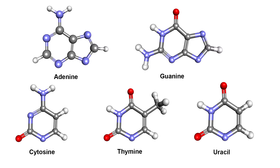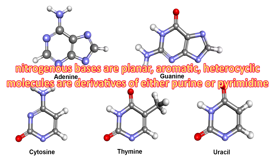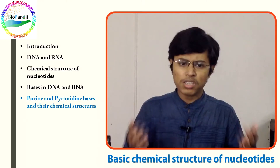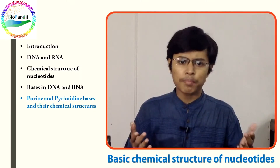As you can see, these are all aromatic bases, and they all have planar conformations. The nitrogenous bases are planar, aromatic, heterocyclic molecules that are derivatives of either purine or pyrimidine.